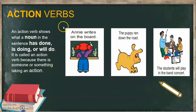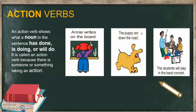For example: 'Annie rides on the board' — what is Annie doing? She rides on the board. 'The puppy ran down the road' — the action is 'ran.' 'The students will play in the band concert' — our verb here is 'play.' Play a musical instrument — that is an action word.